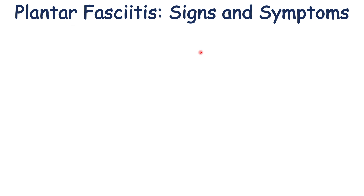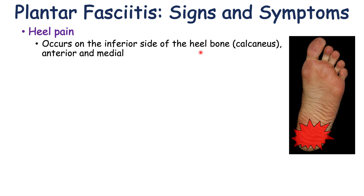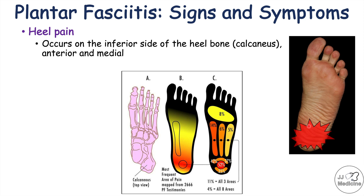The hallmark finding in plantar fasciitis is heel pain — a recurrent heel pain that occurs in a particular pattern. It most commonly occurs on the inferior side of the heel bone, on the anterior and medial aspect. While the heel is the most common location, pain can also occur in other parts of the foot including the middle foot. The pain is mostly unilateral, but in roughly one-third of cases it can occur bilaterally. In some severe cases, the pain can radiate proximally up the leg.